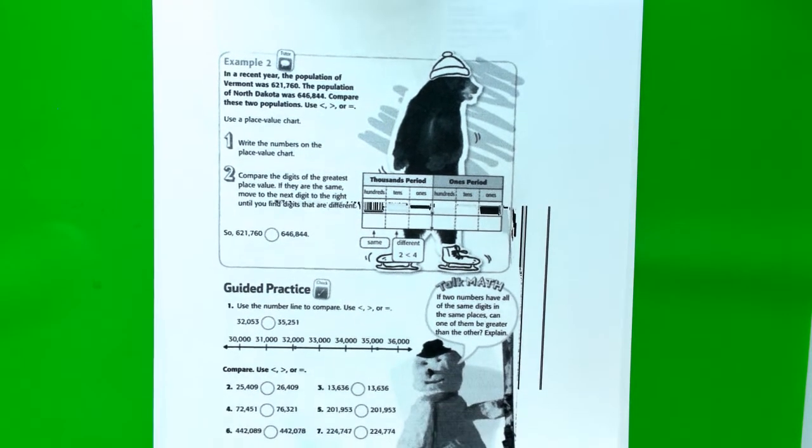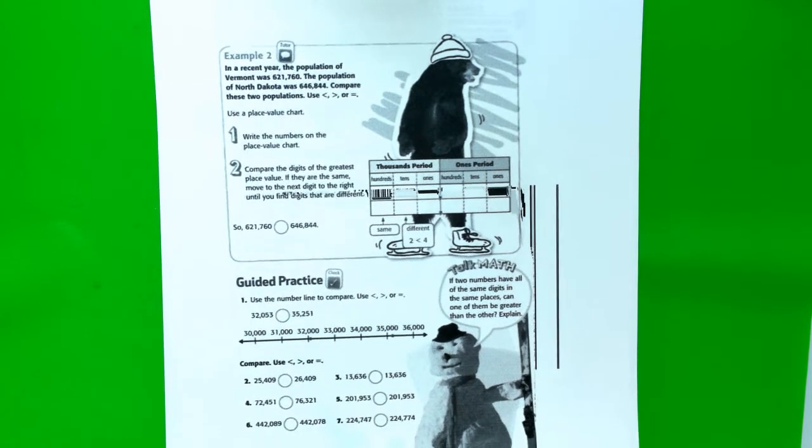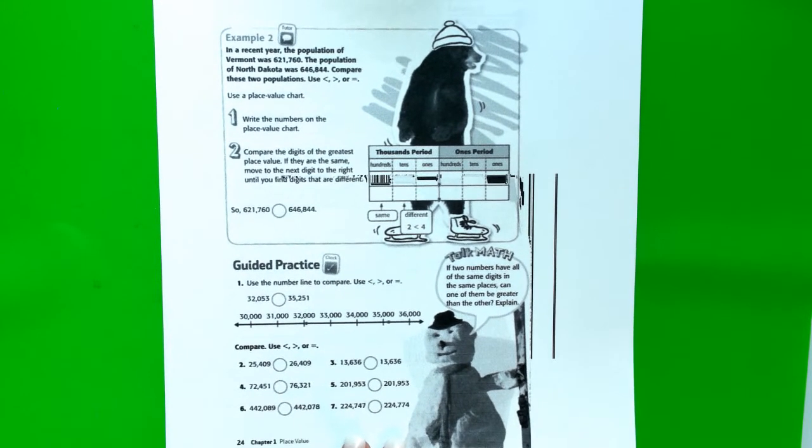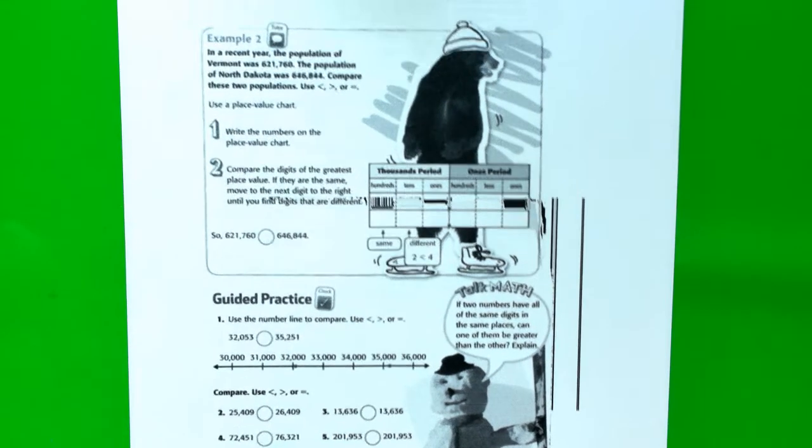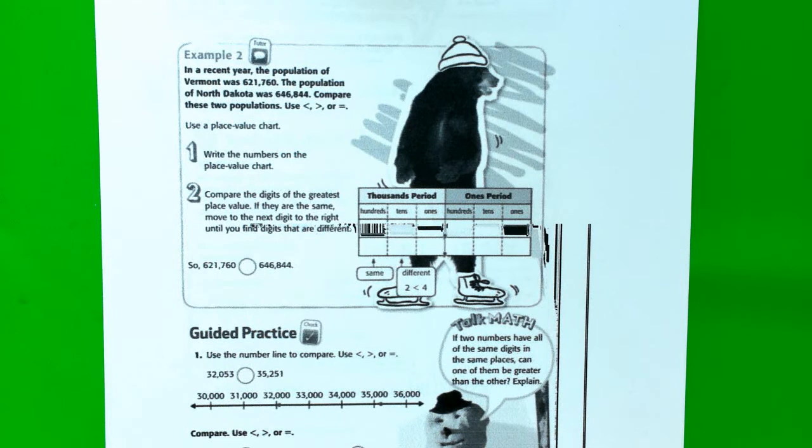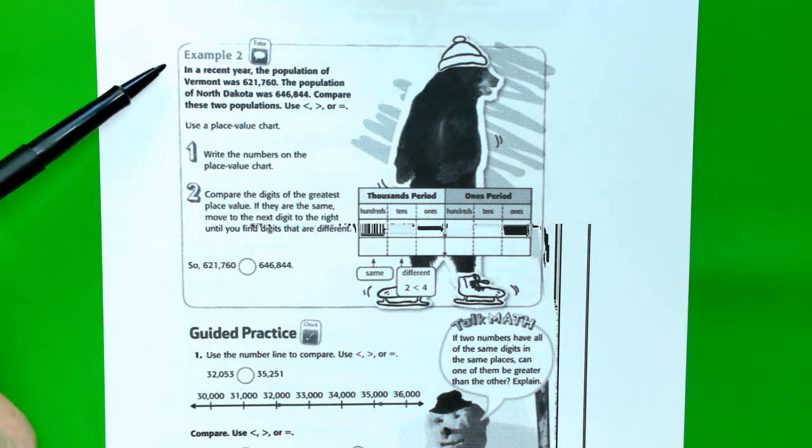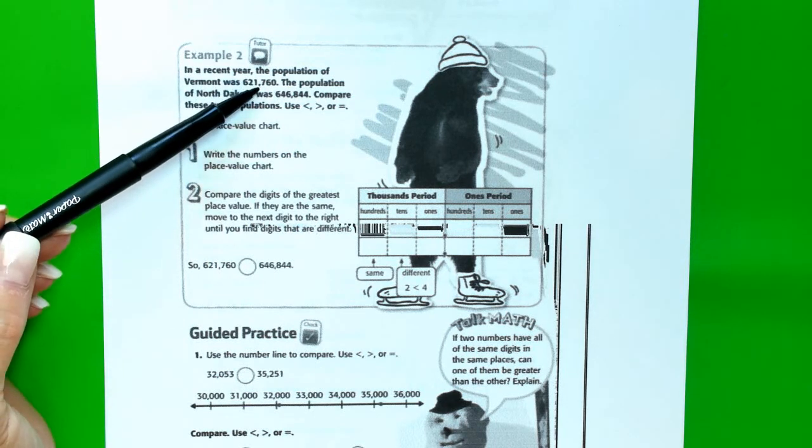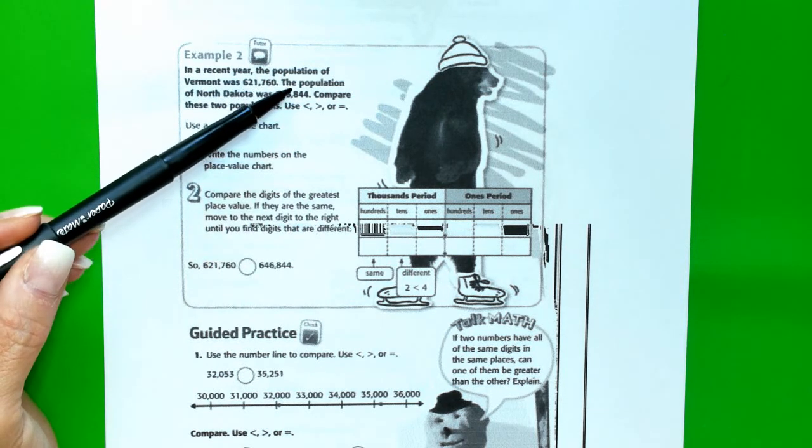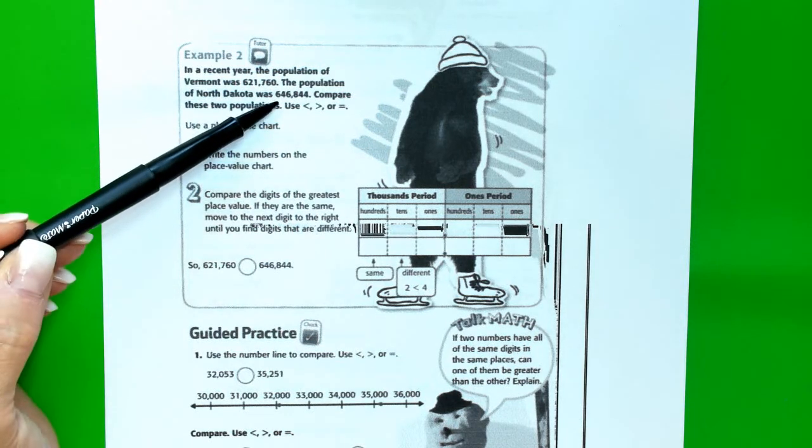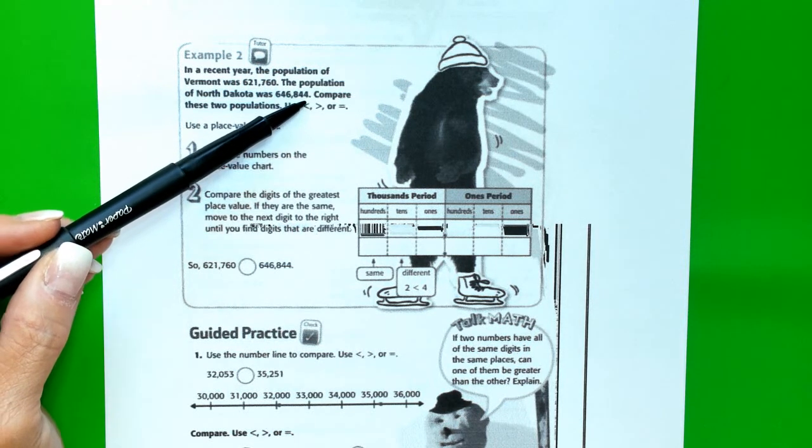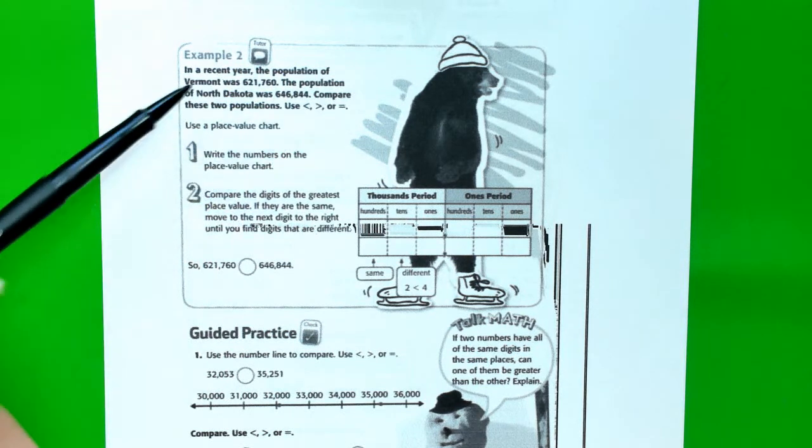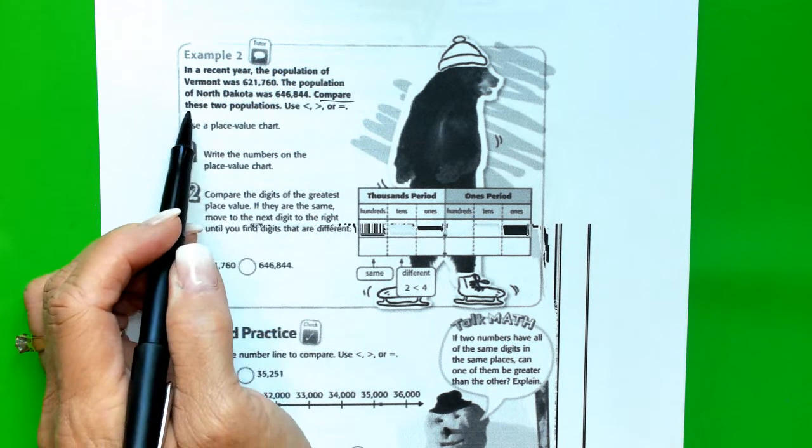Let's look at example number two. It says, in a recent year, the population of Vermont was 621,760. The population of North Dakota was 646,844. Compare these two populations.